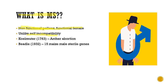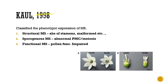The concept of male sterility has long been known in plants. In 1763, Carl Rutter reported anther abortion, and in 1932, Beadle identified 15 male sterile genes. In 1998, a scientist named Carl divided male sterility into four phenotypic classes based on the generalized phenotypic expression of male sterility in plants.